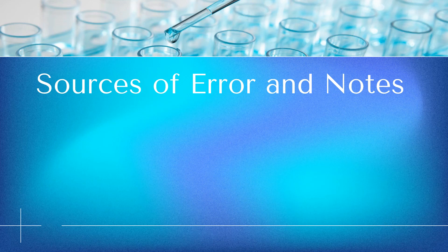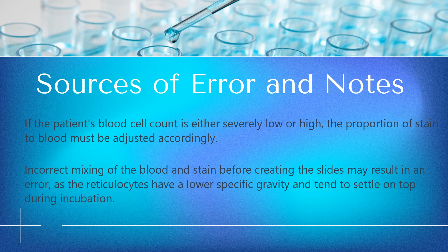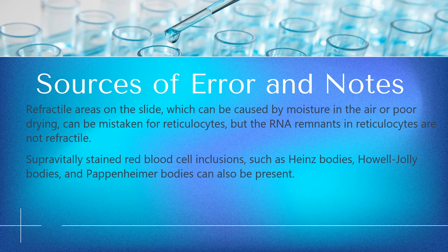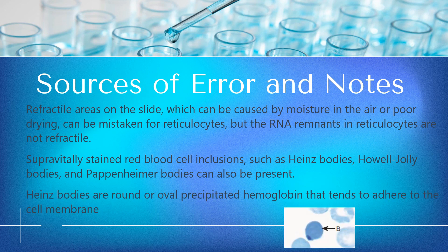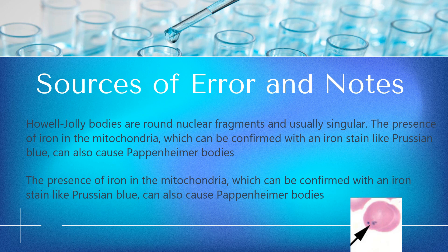Sources of Error: If the patient's blood cell count is severely low or high, the proportion of stain to blood must be adjusted. Incorrect mixing before creating slides may cause error, as reticulocytes have lower specific gravity and tend to settle on top during incubation. Refractile areas on the slide, caused by moisture or poor drying, can be mistaken for reticulocytes, but RNA remnants in reticulocytes are not refractile. Supravitally stained red blood cell inclusions such as Heinz bodies, Howell-Jolly bodies, and Pappenheimer bodies can also be present. Heinz bodies are round or oval precipitated hemoglobin adhering to the cell membrane, while Howell-Jolly bodies are round nuclear fragments. Iron in mitochondria, confirmed with Prussian blue iron stain, can also cause Pappenheimer bodies.